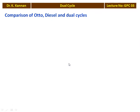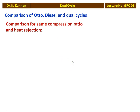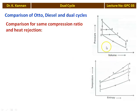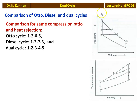Now we compare the Otto cycle, diesel cycle, and dual cycle. The first parameter for comparison is the same compression ratio and same heat rejection. Compression ratio is V1/V2. For all three cycles, the 1-2 compression line is common, and the heat rejection 5-1 line is also common. From the diagram, the Otto cycle is 1-2-6-5-1: isentropic compression, constant volume heat addition, isentropic expansion, constant volume heat rejection.